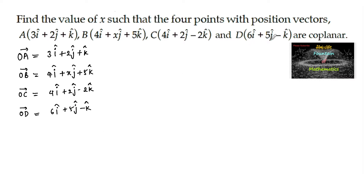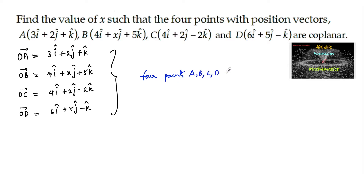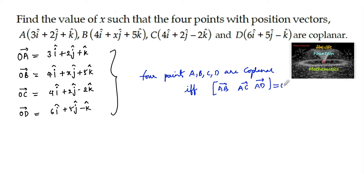To prove that the four points are coplanar, the condition is: four given points A, B, C, D are coplanar if and only if the scalar triple product — that is, [AB, AC, AD] — must be equal to 0.